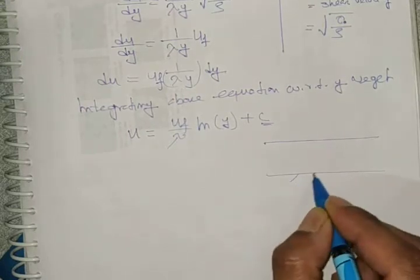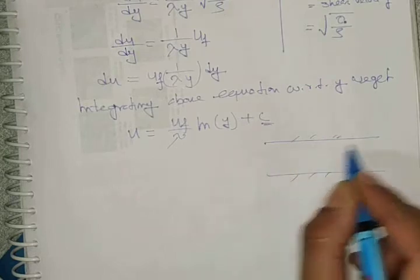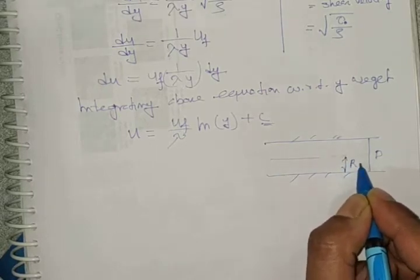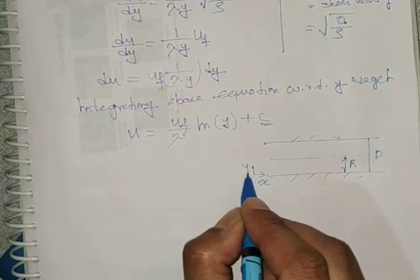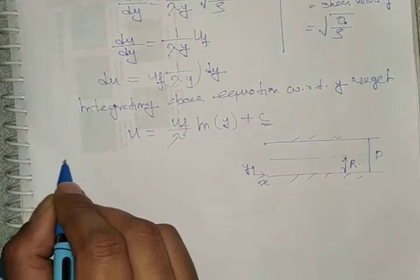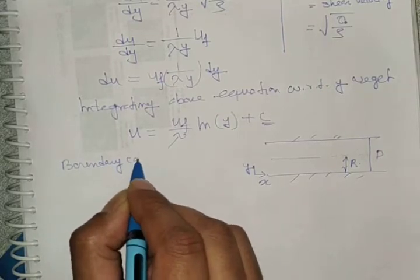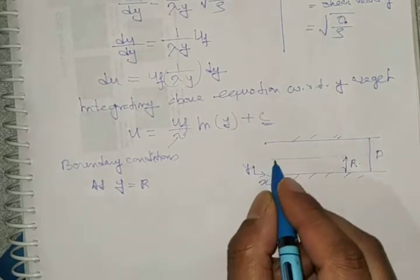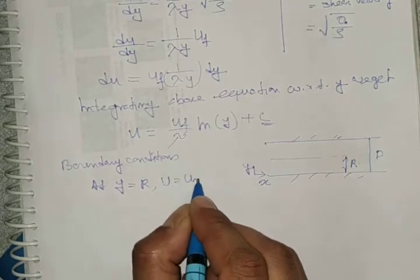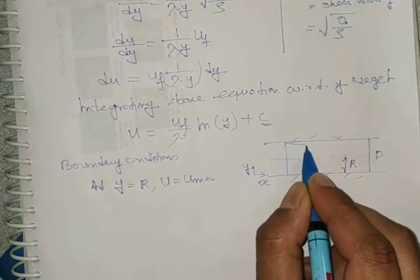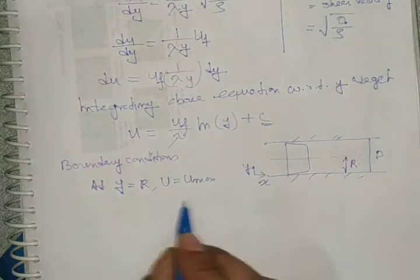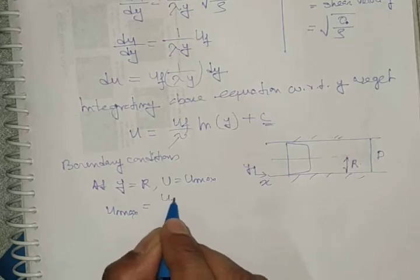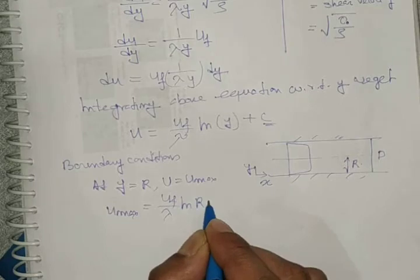Considering the pipe geometry: this is the pipe, this is the diameter, this is your centerline, r is the radius, x is the axial direction, and y is the radial direction. Applying the boundary condition: at y = r, u = u_max. Substituting into the equation gives u_max = (u_f / λ)·ln r + C.